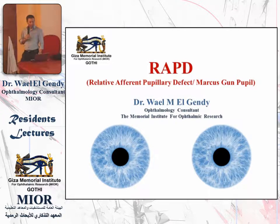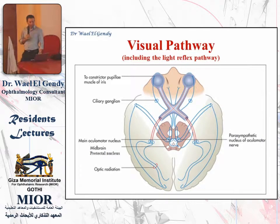In order to understand the relative afferent pupillary defect, first we need to go through the visual pathway and the light reflex pathway. The visual pathway starts in the retina, then the optic nerve, then passes the chiasma and the optic tract. From the optic tract, you relay in the lateral geniculate nucleus, and from the lateral geniculate nucleus comes out the optic radiation, which ends in the occipital visual cortex.